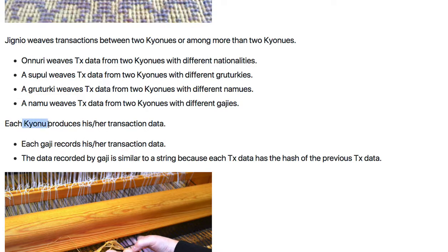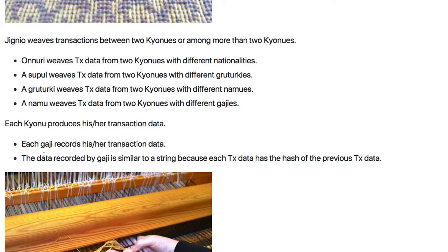Each gyonu produces his or her own transaction data. For example, a member of Adam's family named James will record his transaction data only. Another person named Sukhee will record her transaction record in her gaji. Each member records his or her transaction history in his or her own gaji. Each gaji records its historical transaction data.